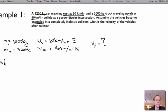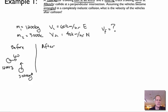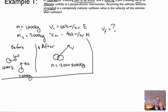So if we do a sketch, before collision we have A going east and B going north. A is 60 kilometers per hour with a mass of 1,200 kilograms, and B is a 3,000 kilogram truck moving at 40. After collision, we have both masses together, and I'm going to predict they move off in some combined velocity direction, with the combined mass being 1,200 plus 3,000.